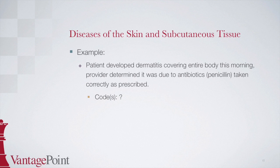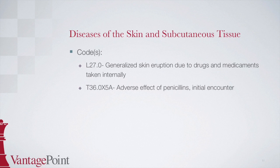Let's do another example. A patient developed dermatitis covering their entire body this morning, and the provider determined it was due to antibiotics, specifically penicillin, taken correctly as prescribed. How would you code this? Please pause the webinar to complete this example and then hit play to learn the answer. The first code is L27.0, generalized skin eruption due to drugs and medicaments taken internally. To locate this code, start at dermatitis in the alphabetic index, then locate the phrase 'due to.' From there, look for drugs and medicaments with generalized and internal use in parentheses, which points to L27.0, which you would then confirm in the tabular.